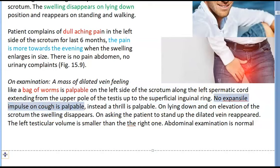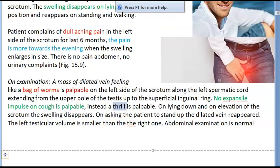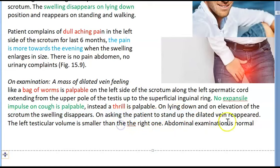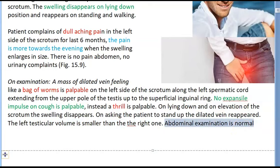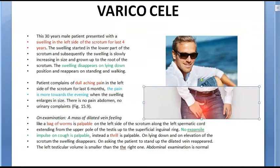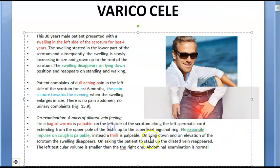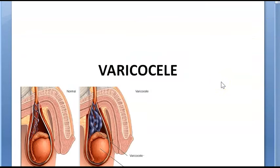There is no expansile impulse on cough, which rules out hernia. Instead, a thrill is palpable. On lying down and elevation of the scrotum, the swelling disappears because venous drainage occurs. The left testicular volume is smaller than the right. Abdominal examination is normal. This is a classic left-sided varicocele. The appropriate investigation is a color Doppler ultrasound study.